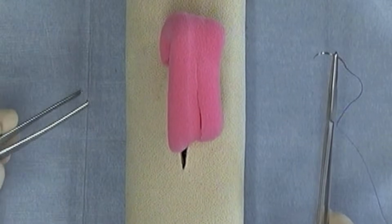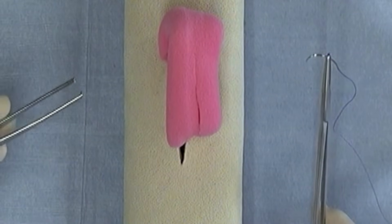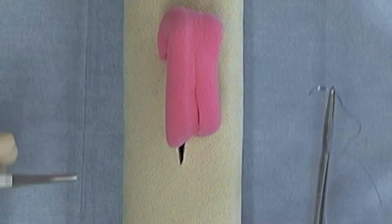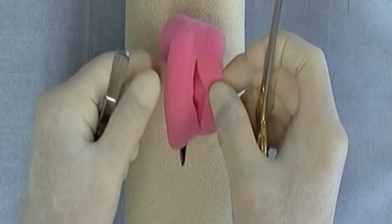To construct the Lembert suture pattern and all of the suture patterns used for viscera, you will need this portion of the daisy, which is the facsimile of the piece of bowel.